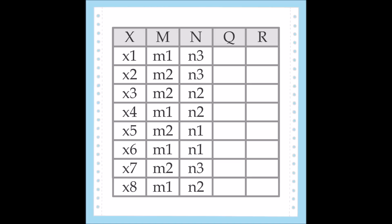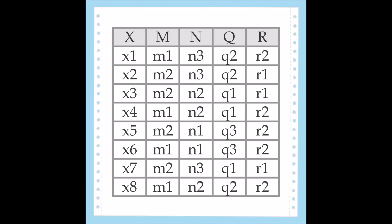This system consists of tuples X1 through X8 and contains attributes M, N, Q, and the decision feature R. The system contains eight records X1 through X8. Attribute M can be M1 or M2. The domain of attribute N is N1, N2, or N3. Like attribute N, attribute Q can be Q1, Q2, or Q3. Lastly, the decision feature can be R1 or R2.